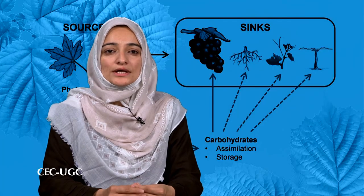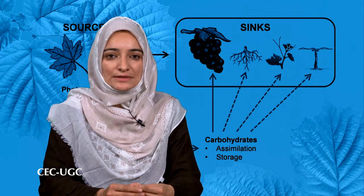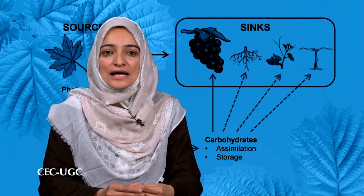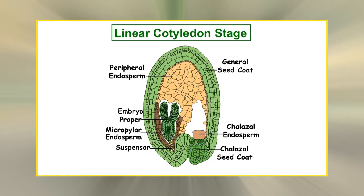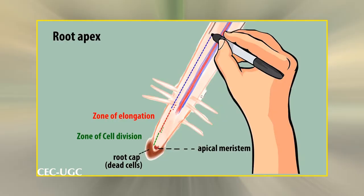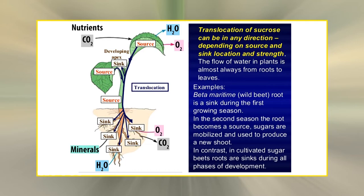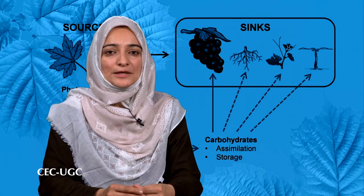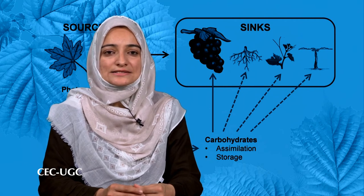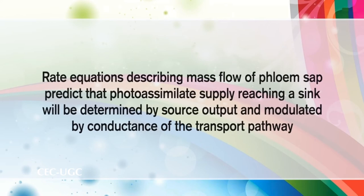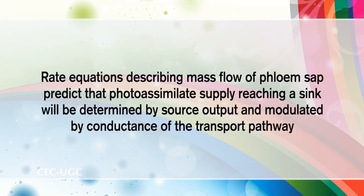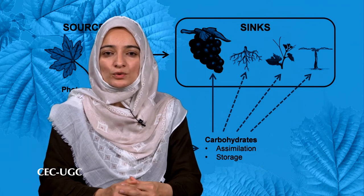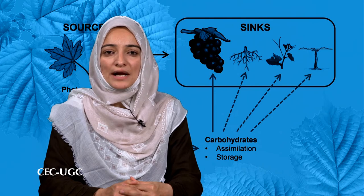Now, coming to the sink types. First, meristematic sinks. Meristems import only a small proportion of total plant photoassimilate, and photoassimilate supply has been implicated as a limiting factor in shoot apical meristems and might also be restricted in developing seeds — including endosperm, embryo — and root and floral apices. Agricultural yields might therefore increase if plants could be modified to enhance the supply of photoassimilates to meristems. Increased photoassimilate output from source leaves increases growth activity of primary meristems.